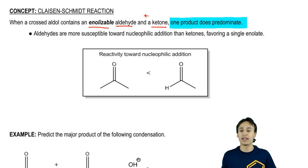Why? Because it turns out that aldehydes are more susceptible to nucleophilic addition than ketones. So it's going to favor one of the enolates over the other.